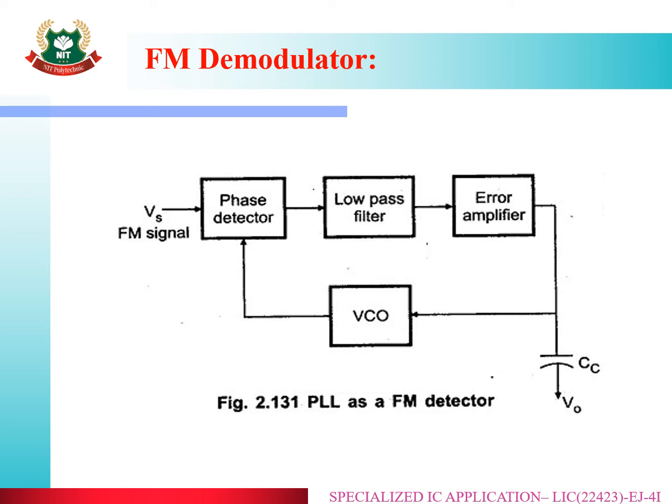That particular signal then goes towards the Voltage Controlled Oscillator (VCO). The VCO, when there are voltage variations at the output side, gives a constant output. Here, the capacitor is the demodulating capacitor, where you see the demodulated signal. By using all these blocks, you convert the modulated signal into the demodulated signal.